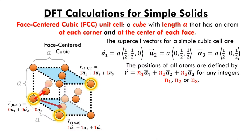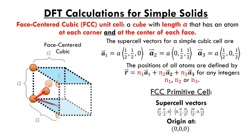Just like in the simple cubic case, the primitive cell for an FCC material can be described using just a single atom, placed at the origin for convenience. The supercell vectors that describe the FCC primitive cell are (a/2, a/2, 0), (0, a/2, a/2), and (a/2, 0, a/2).